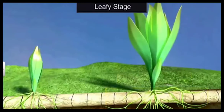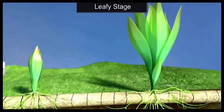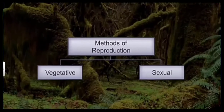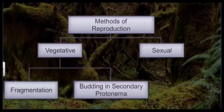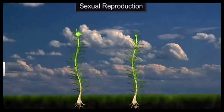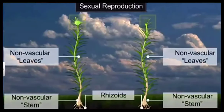This leafy stage, when it grows, produces multicellular rhizoids, and these multicellular rhizoids absorb nutrition from the soil. Methods of reproduction again can be vegetative or sexual. Vegetative reproduction may be by fragmentation or by budding in the secondary protonema stage.